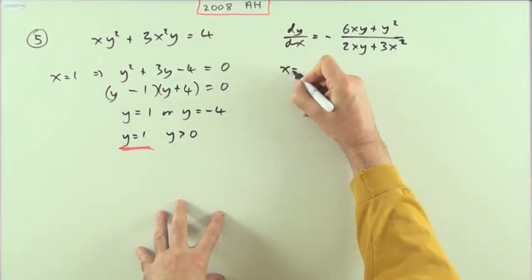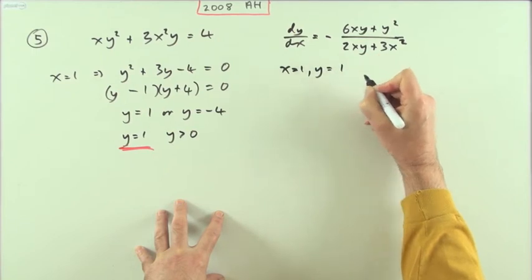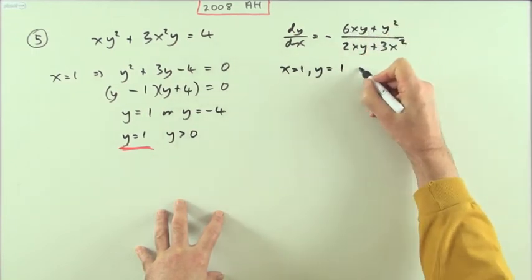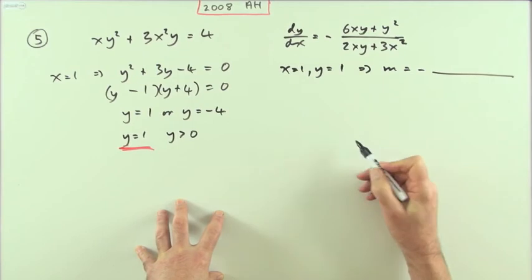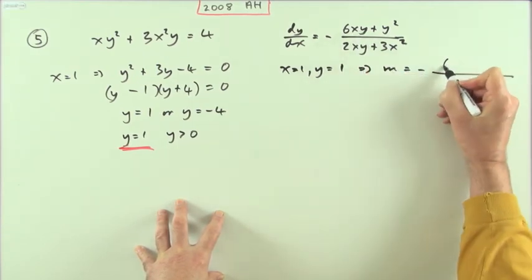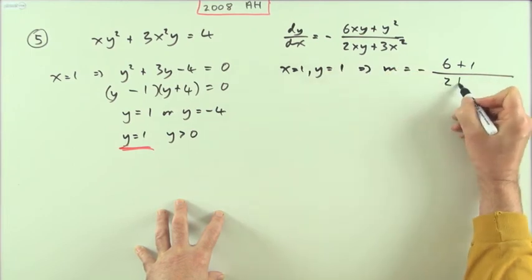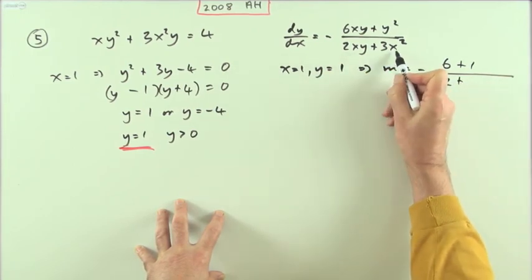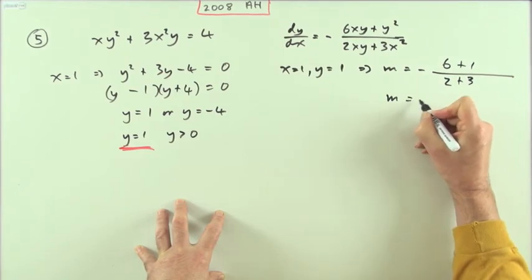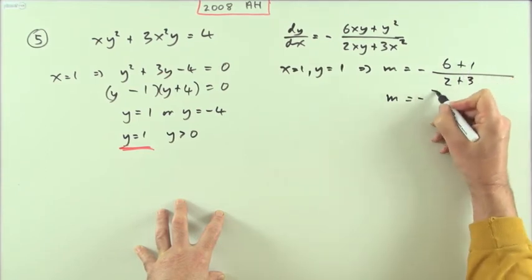Now that I know that x is 1 and y is 1, I can feed it into this to get the gradient. So it's going to be the negative of, now if x is 1 and y is 1, that part's 6. If y is 1, that part's 1. That part will be 2, 2 times 1 times 1, and 1 squared is 1 times 3 is 3. So the gradient is going to be negative 7 upon 5.